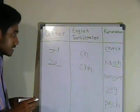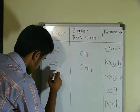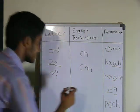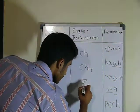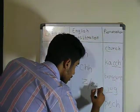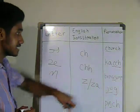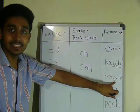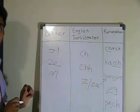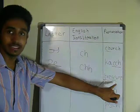The next letter is Z. Its English transliteration is Z, or ZA. Its pronunciation is same as S in treasure.